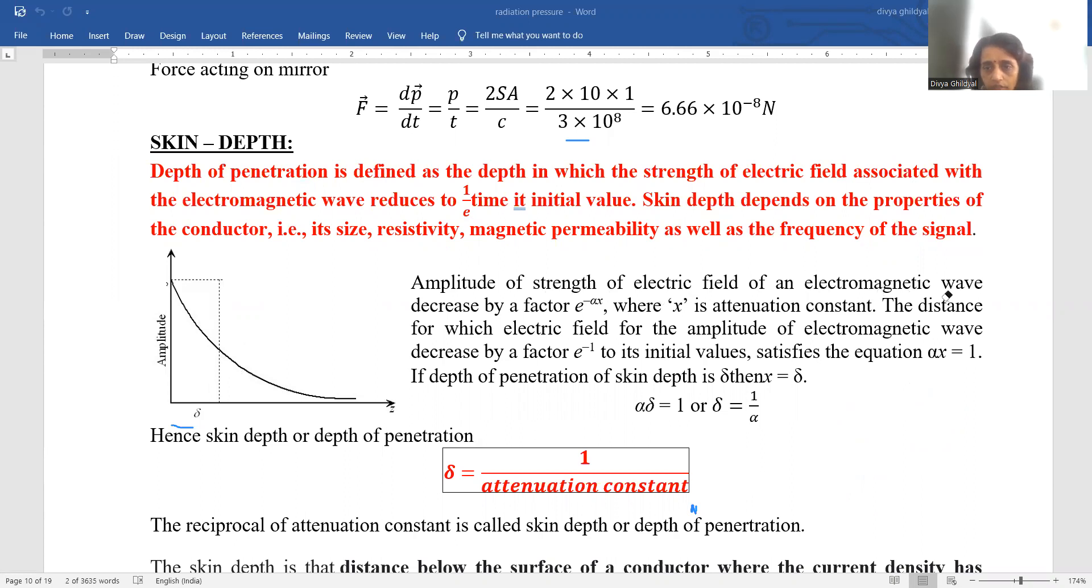Amplitude of strength of electric field of an electromagnetic wave decreases by a factor of e to the power of minus alpha x where x is your attenuation constant. The distance for which electric field for the amplitude of electromagnetic wave decreases by a factor e inverse to its initial value satisfies the equation. So see here, this alpha x, I have equated to 1.